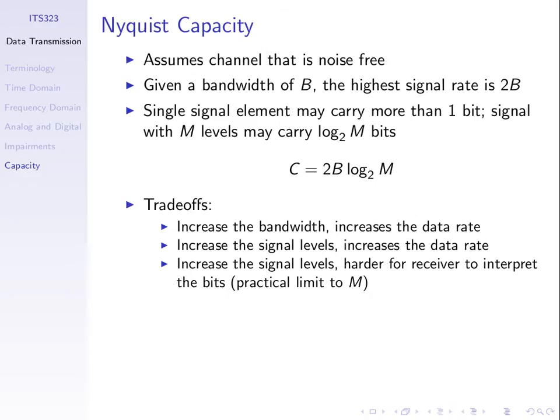One thing the equation doesn't tell us is that increasing the number of levels causes more errors. That's not captured in this equation because noise causes more errors, and it's harder for the receiver to receive the data. The Nyquist capacity equation assumes there is no noise. So it's true if there is no noise — just increase M. But in reality, there is noise in communication systems, so we need to look at it from other viewpoints as well.